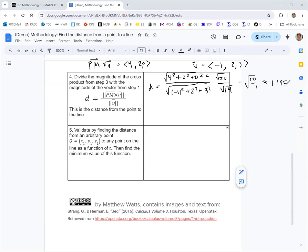For validation here, you can find the distance from an arbitrary point x1, y1, z1 to any point of the line as a function of t, and then use calculus to find the minimum value of that function.